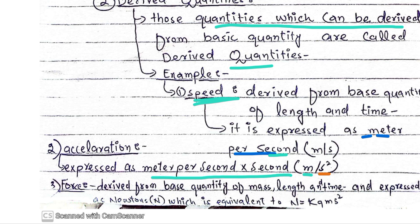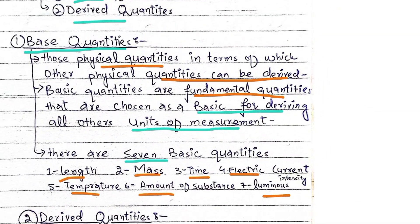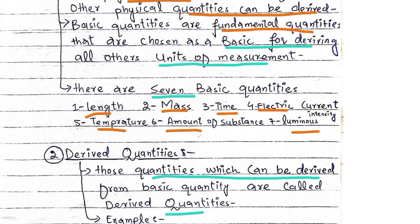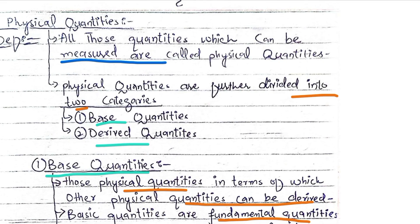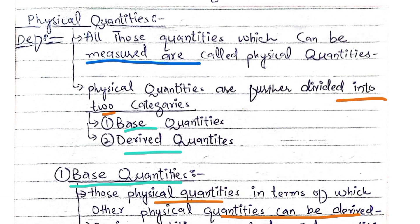The unit of a derived quantity is also derived from the units of the base quantities. That concludes today's topic. This topic was for the provincial level. In the next video, we will cover the communication level topic. Was-salaam.